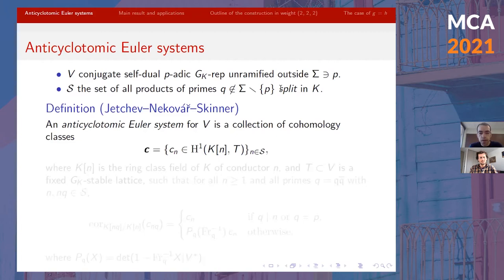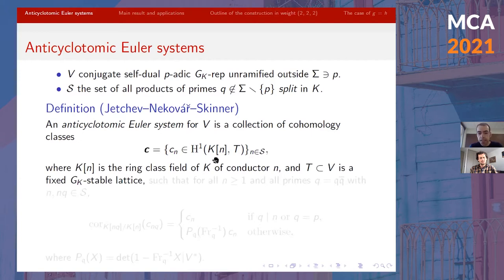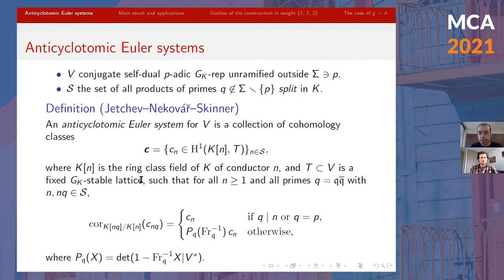In recent work, Nekovář and Skinner developed a general theory of anti-cyclotomic Euler systems providing an anti-cyclotomic counterpart of many results in Rubin's red book. In their theory, an anti-cyclotomic Euler system for V is a collection of cohomology classes — one for each N, where K(N) is the ring class field of conductor N, with N running over all products of primes in the set S. These classes are integral, living in a fixed lattice T inside V, which is G_K-stable and independent of N.